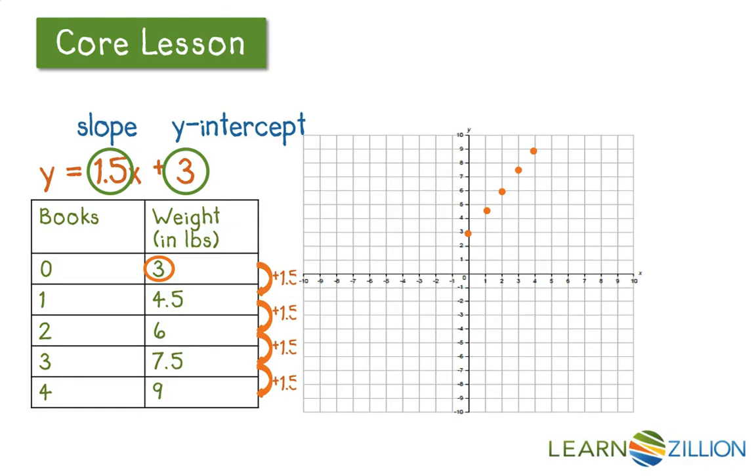And then from there I can say, hey, if I had eight books, how many pounds would my backpack weigh? And I can either substitute 8 in for x, or I can continue with my table, or I can continue with my graph. And I would find that eight books would weigh 15 pounds.